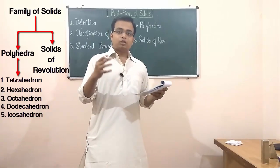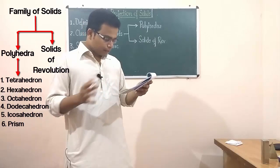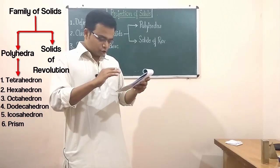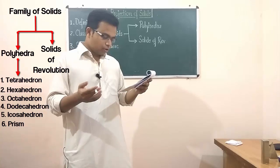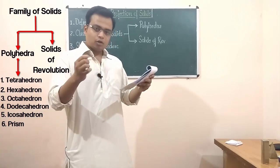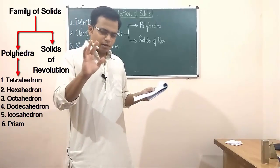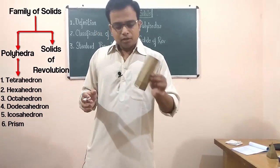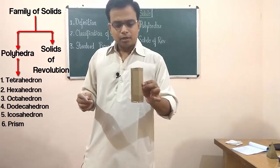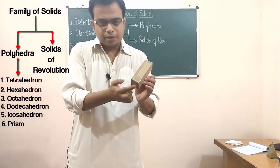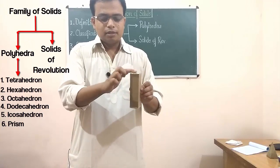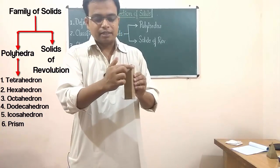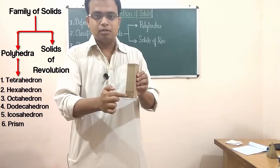The sixth polyhedron is the prism. A prism has two equal and similar faces called its ends, parallel to each other, joined by other faces which are parallelograms or rectangles. The imaginary line joining the center of the base to the center at the top is called the axis. For example, this here is a square prism — the top and base are similar, equal, and parallel, joined together by rectangular faces.